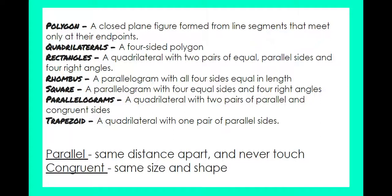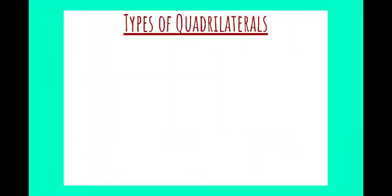These are some important vocabulary words needed for classifying quadrilaterals. We have definitions for polygon, quadrilateral, rectangle, rhombus, square, parallelogram, and trapezoid. We also discuss what parallel and congruent mean — parallel being lines the same distance apart that never touch, and congruent meaning the same size and shape.